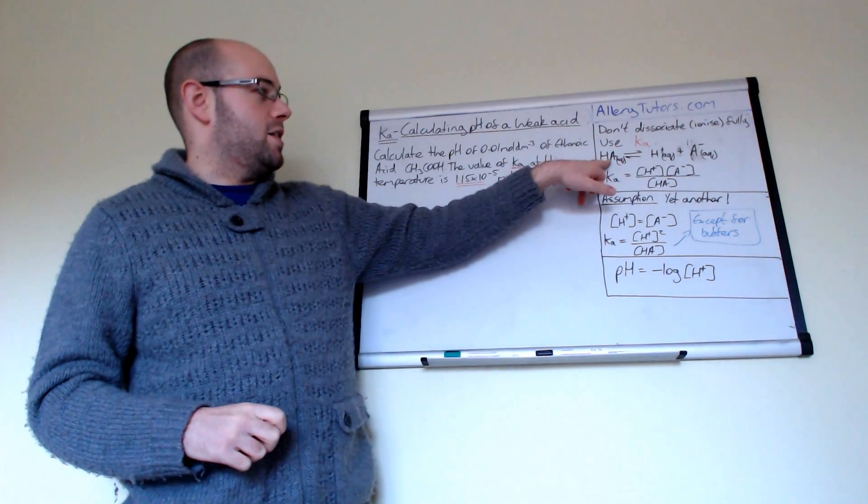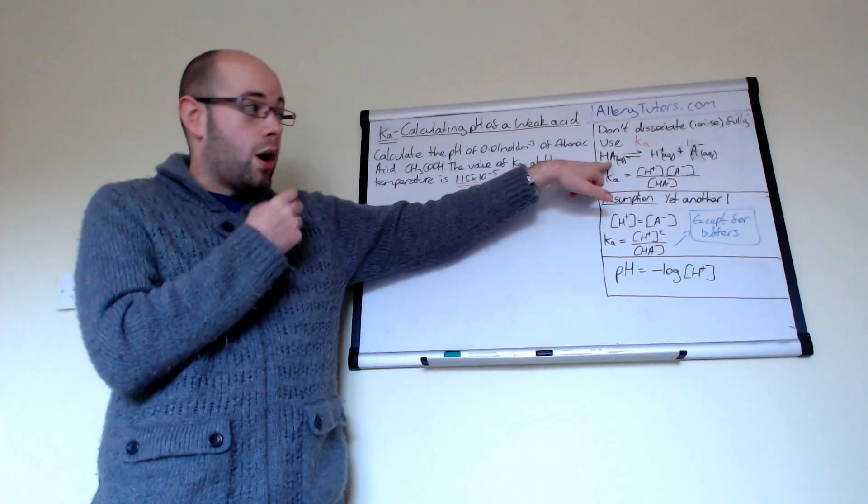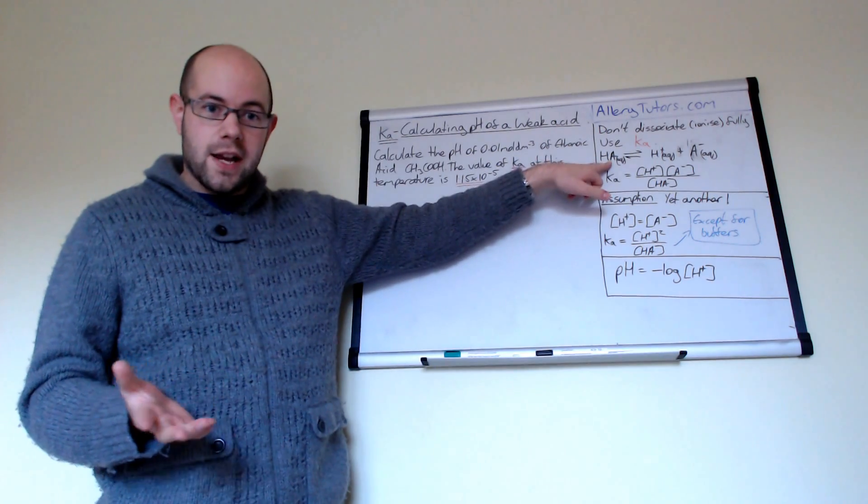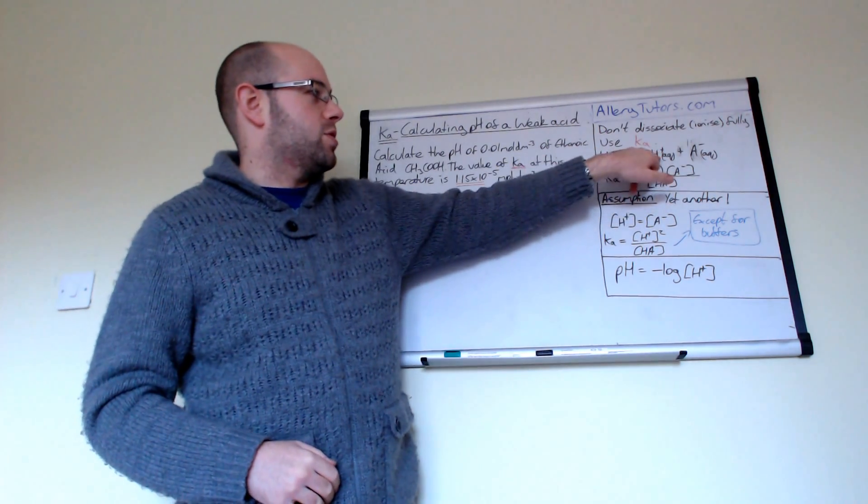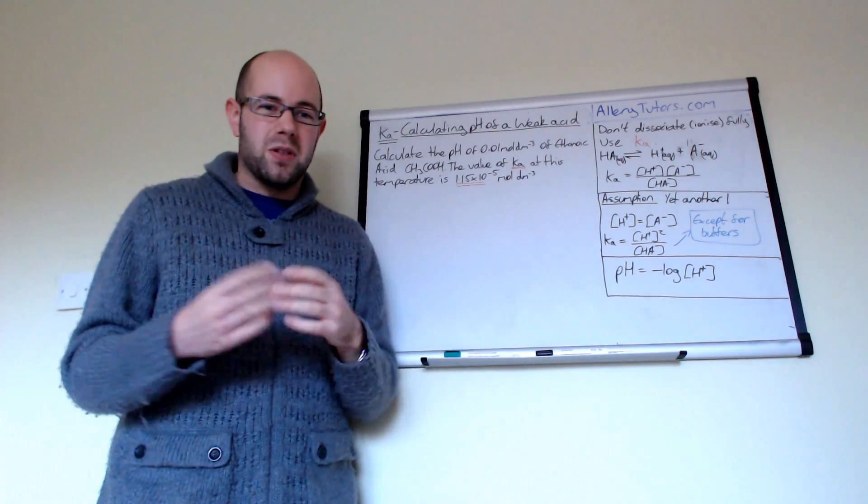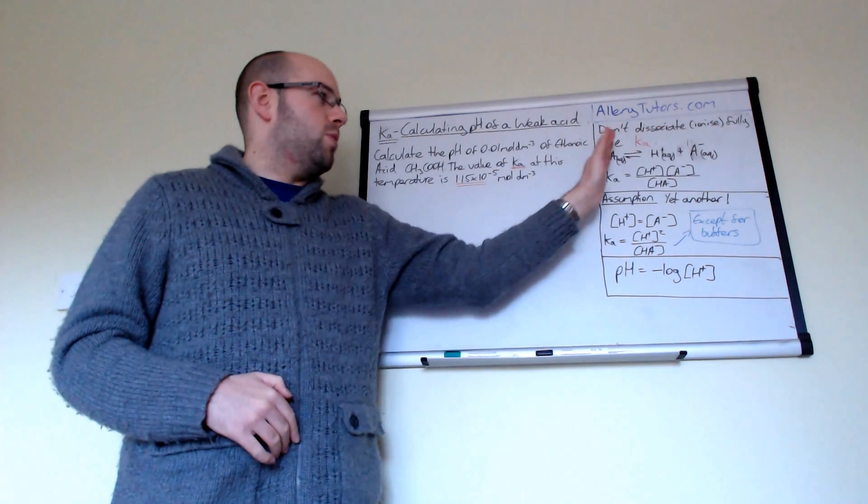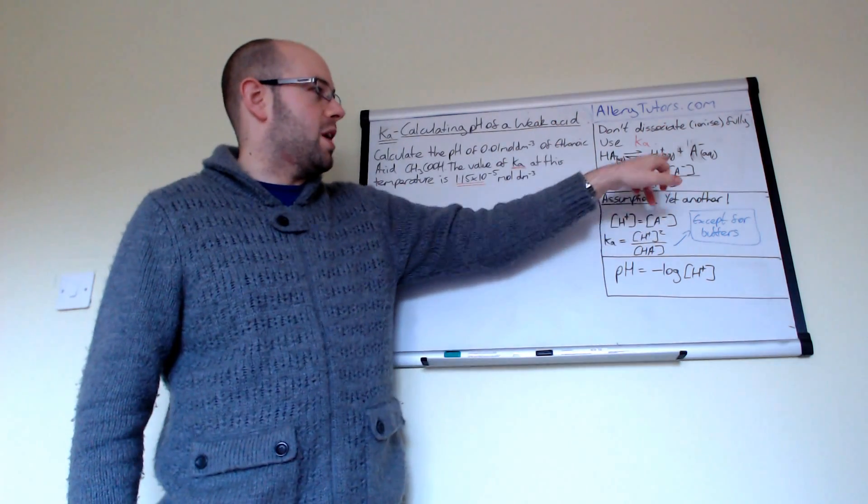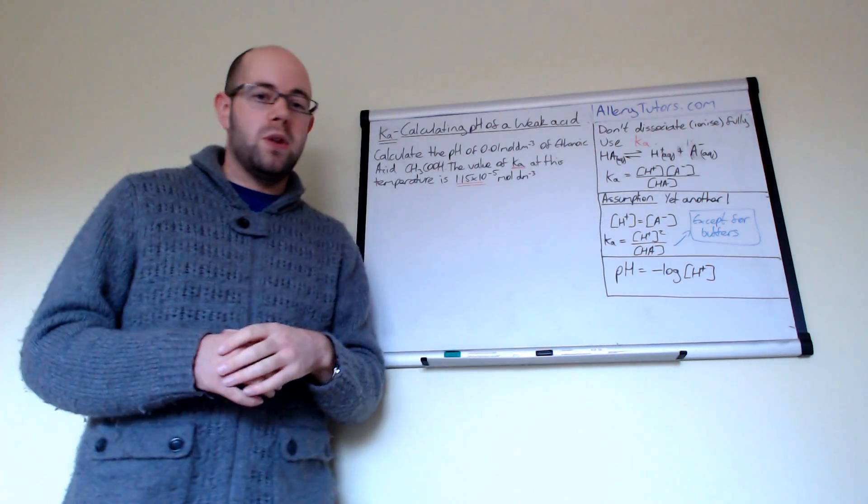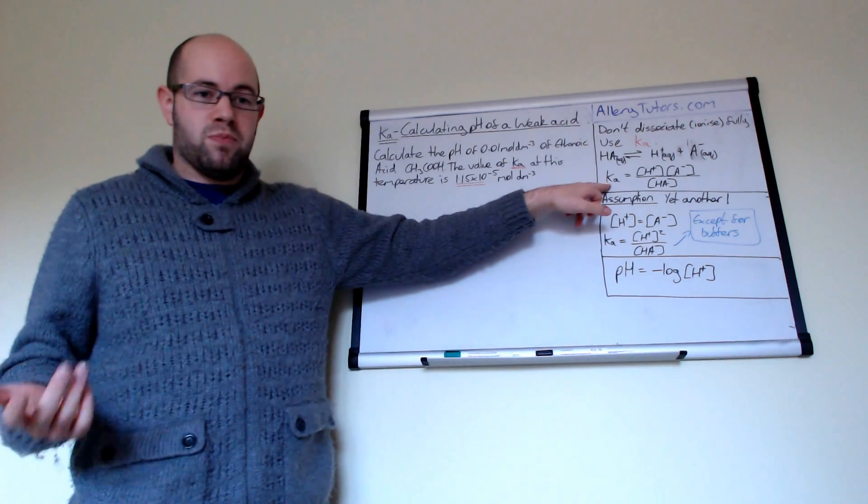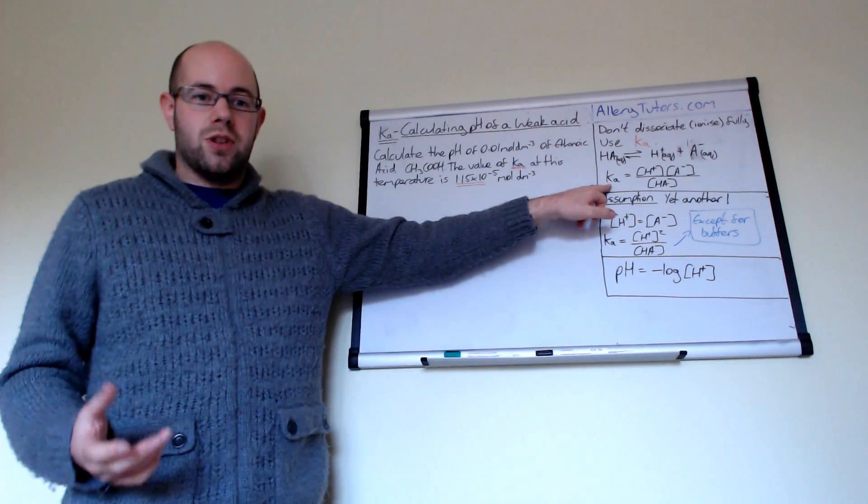So what that means is that here's your acid here, so this is our weak acid, let's assume which is HA, and we can say that it produces H plus and A minus, but because it doesn't dissociate that much, equilibrium lies well to the left, we don't have a large amount of these and so we use something called a Ka expression and this is the acid dissociation equilibrium constant.